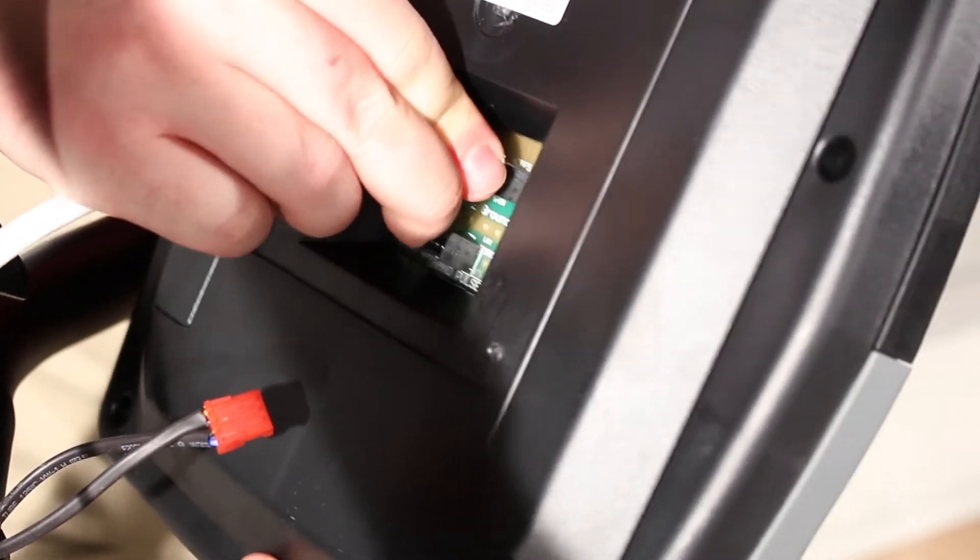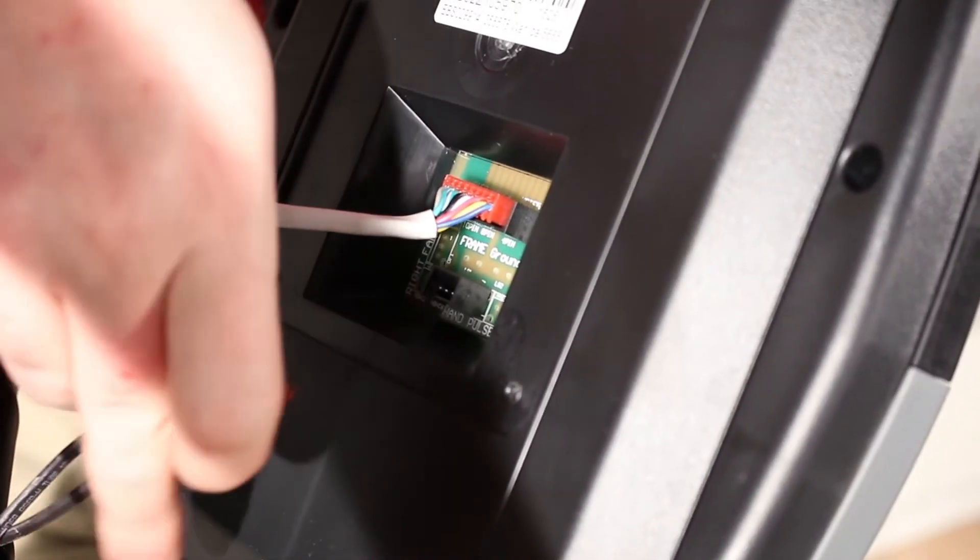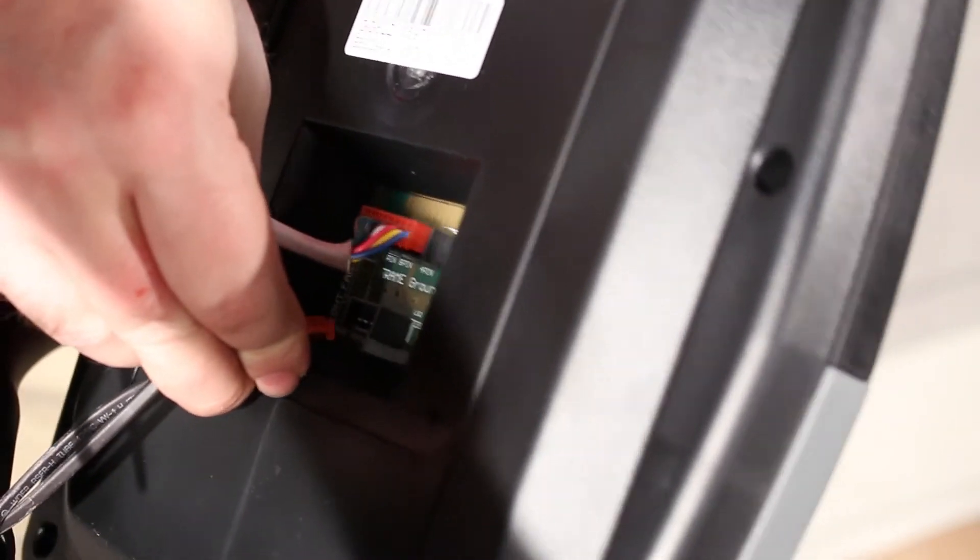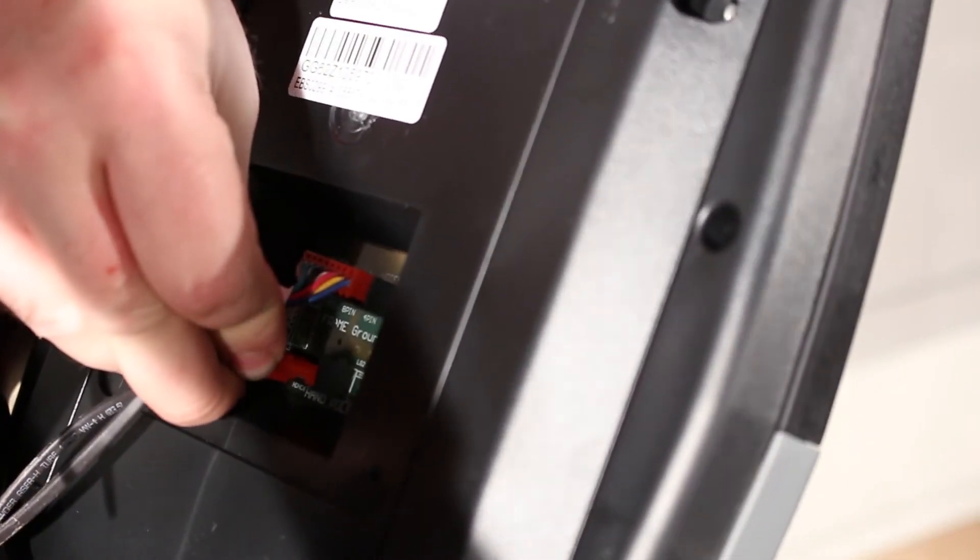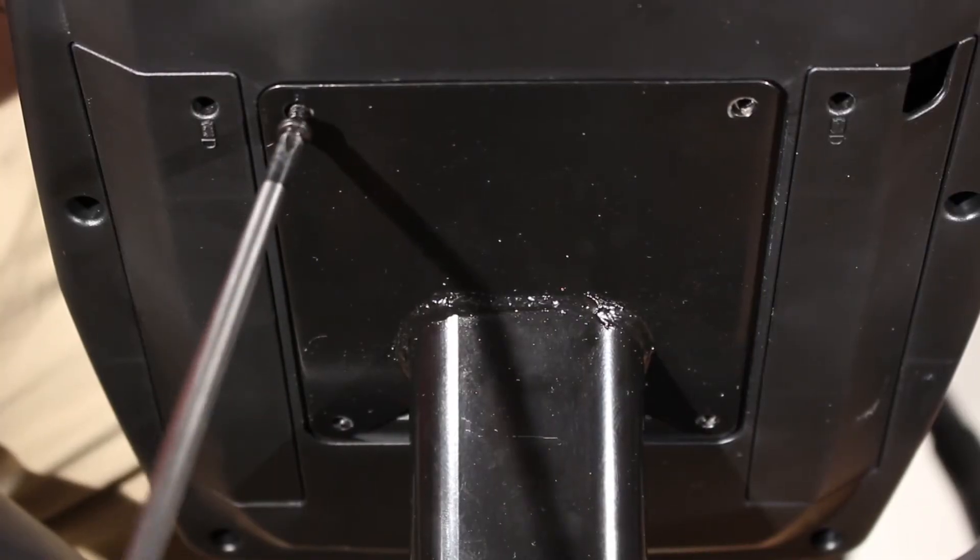Discard the old wire harness and reconnect the new main wire and the pulse wire to the console. Now reattach the console to the upright.